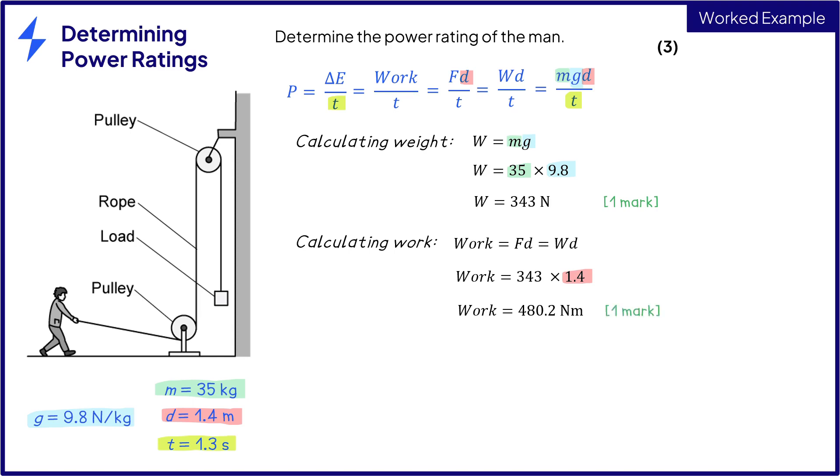Then the final step is to calculate power. So power is the work done per unit time and substituting in those known values gives us work from step two at 480.2 newton meters and time at 1.3 seconds giving us a final answer of 369 watts for the final mark.